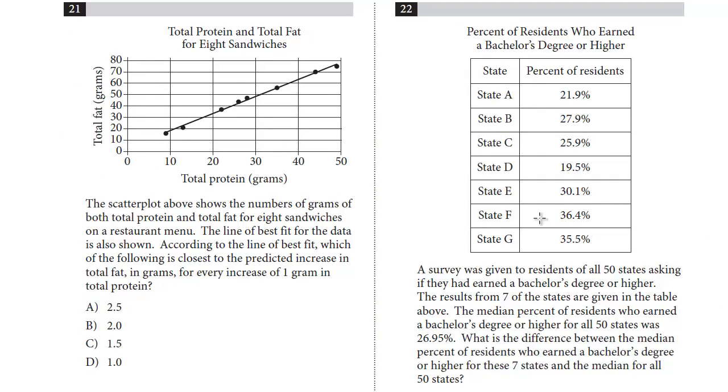So let's look at 21. The scatter plot above shows the number of grams of both total protein and total fat for eight sandwiches on a restaurant menu. The line of best fit for the data is also shown. According to the line of best fit, which of the following is the closest to the predicted increase in total fat in grams for every increase of one gram in protein.